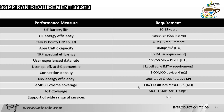For eMBB extreme coverage, the maximum coupling loss is 140 to 143 dB — similar to the RSRP of minus 140 in LTE. For IoT or mMTC coverage, the maximum coupling loss is 164 dB for 160 bits per second, applicable for indoor coverage. Support for a wide range of services is also required.